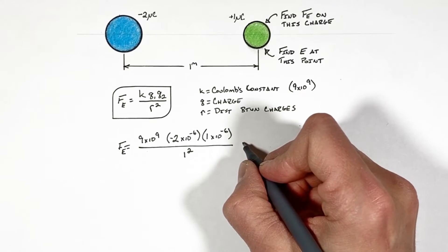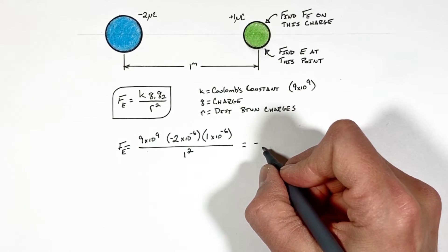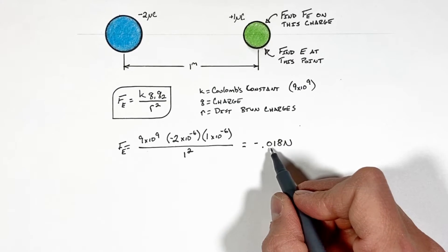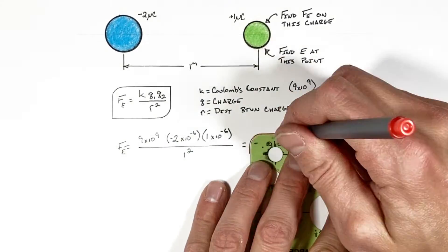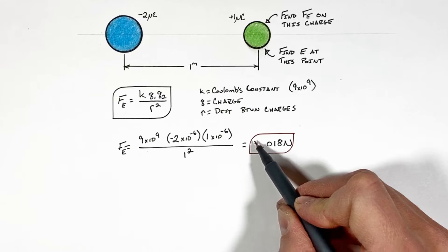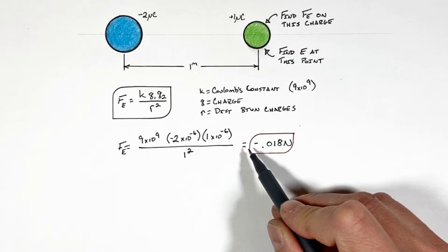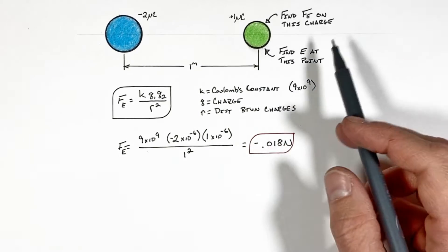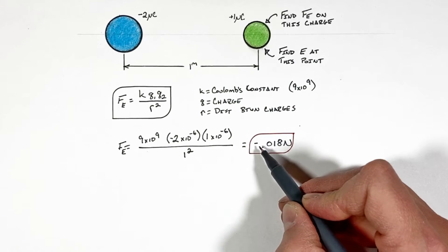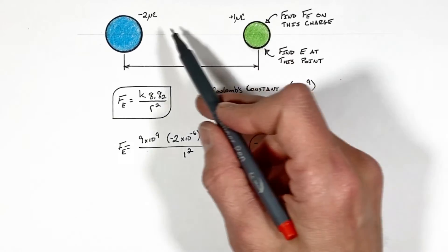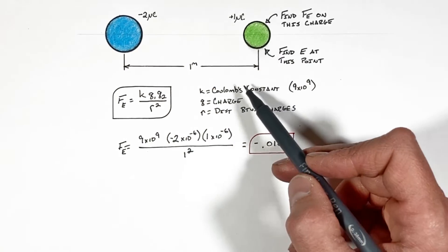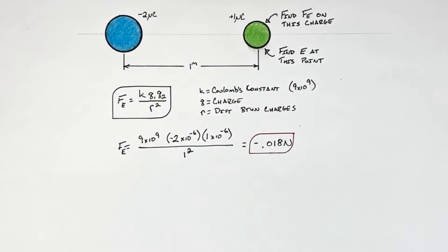This r, however misleading it is, is truly the center-to-center distance of these two charges. Now working this out we find the electric force is negative point zero one eight newtons. Now we need to talk about the meaning of this negative sign right here. See, this negative doesn't have anything to do with whether the force is left or right. What this negative is telling us is that the force between these two charges is actually causing them to be pulled towards each other.